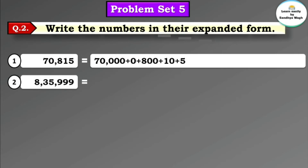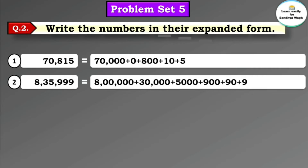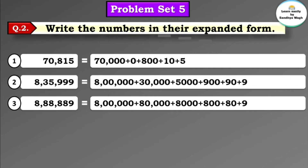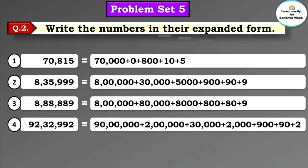Next number: 8,35,999. Expanded form: 8 lakh + 30,000 + 5,000 + 900 + 90 + 9. Using the trick: 8 has 5 digits after it so 8 followed by 5 zeros; 3 has 4 digits after it so 3 followed by 4 zeros. Next number: 8,88,889. Expanded form: 8 lakh + 80,000 + 8,000 + 800 + 80 + 9. Next number: 92,32,992. Expanded form: 90,00,000 + 2,00,000 + 30,000 + 2,000 + 900 + 90 + 2.